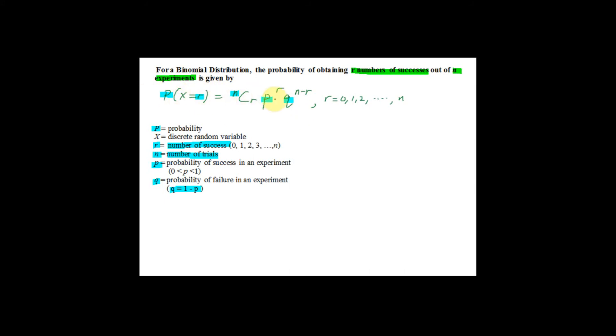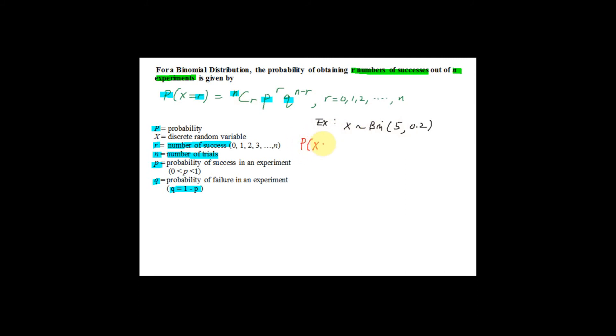The notation for this probability formula may sound really hard at first, but once you have practiced a few questions, you will see that it is actually quite straightforward. Let me give you an example. We have a binomial distribution where x is binomial with n = 5 and the probability for success p = 0.2.